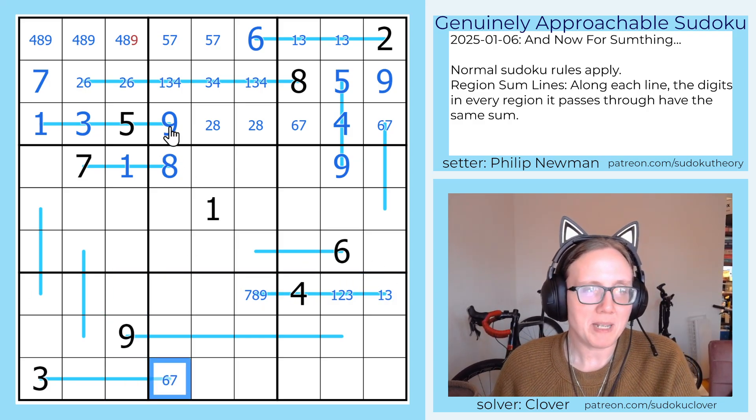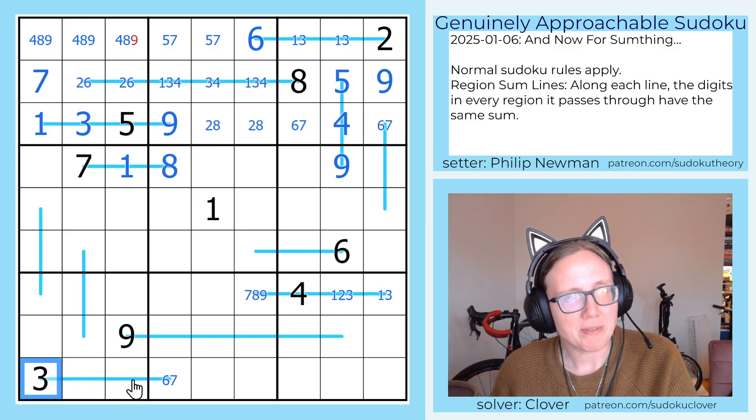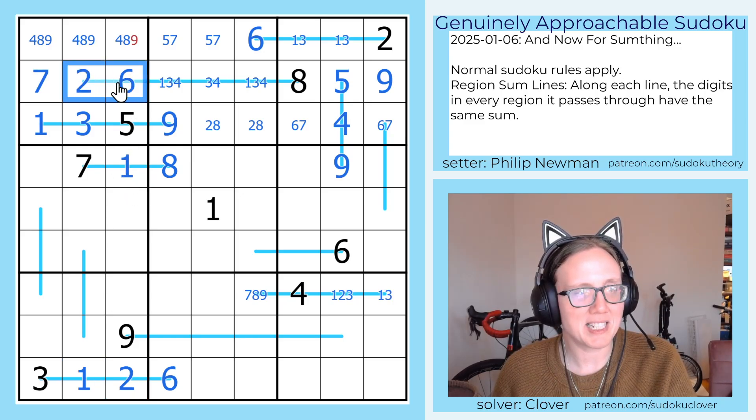This has to be 6 or 7. It could be 8 or 9, except that it sees both of those already. And it can't be 7 because 7 is always 1, 2, 4. So it's 6, which is 1, 2, 3. That's going to crack this pair.